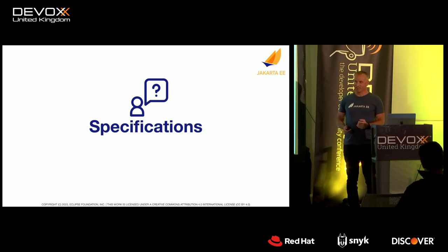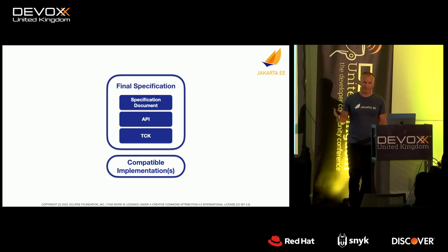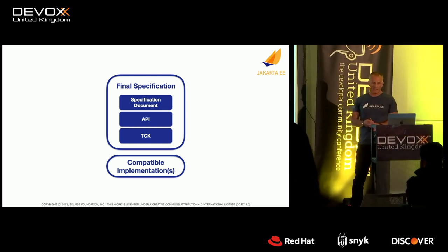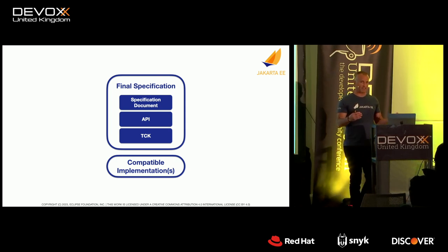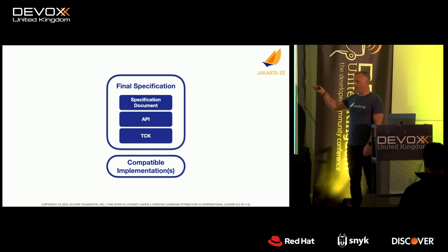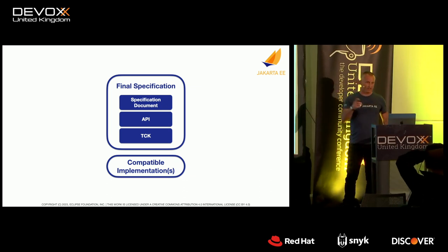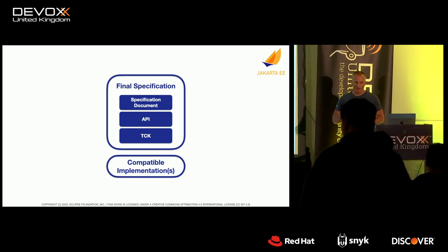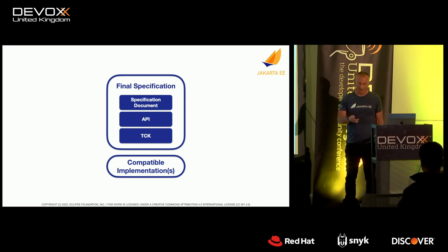Jakarta EE is all about specifications. A specification in Jakarta EE consists of a specification document, an API available on Maven Central, and a TCK or Test Compatibility Kit — a test suite that verifies implementations meet the specification requirements, including signature tests. Compatible Implementations must implement the spec, and we need at least one open source implementation to ratify a final specification. Any implementation can have any license, commercial or open source, but we need at least one open source implementation.